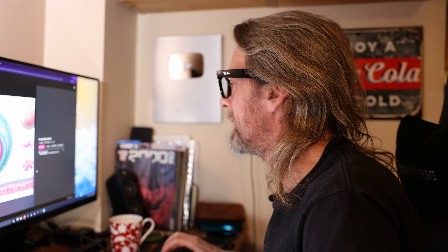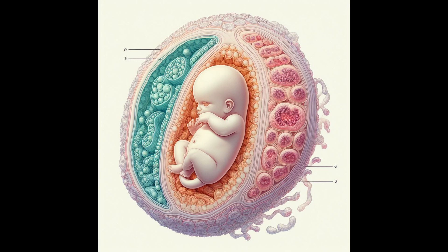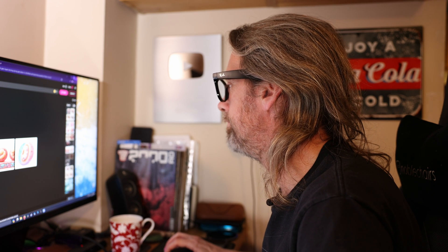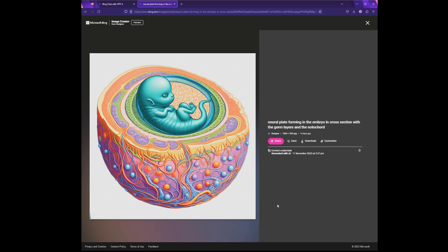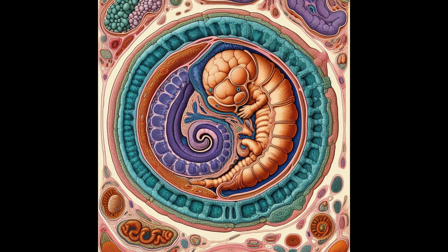Some of this is proper mad. I asked it to make an illustration of the three germ layers forming during gastrulation in the human embryo. Like I say, a variation on the primitive streak — super simple. Not this, not that, not this. And I asked for the neural plate forming in the embryo in cross-section with the germ layers and the notochord. If I said that to a human who understood embryology, you'd know what I meant. Not this. Madness.